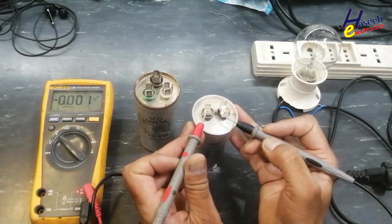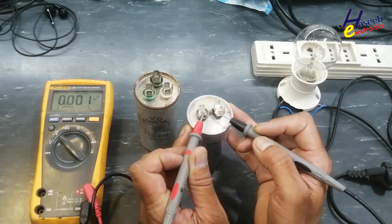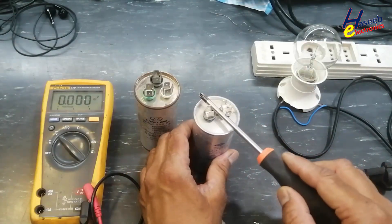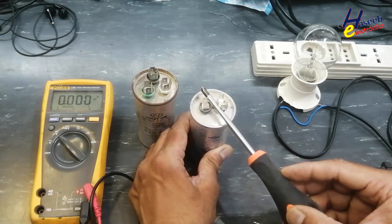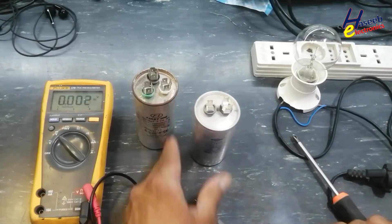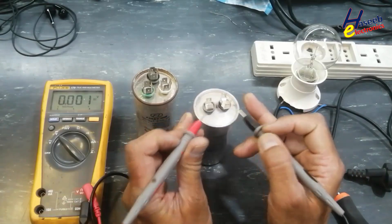Set multimeter to DC voltage, connect to both input terminals. If there is voltage, we will discharge it. Jumper both terminals of the capacitor using screwdriver, never touch metallic part of the screwdriver. Then check voltage, 0V.